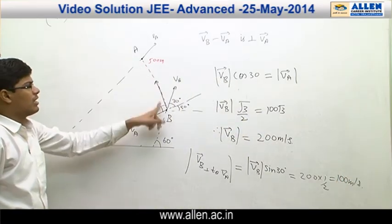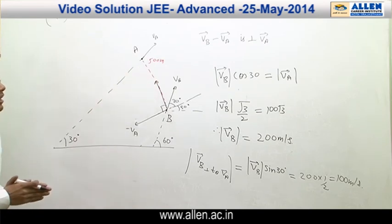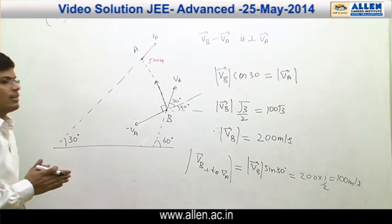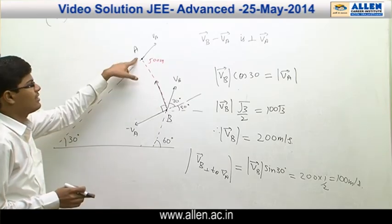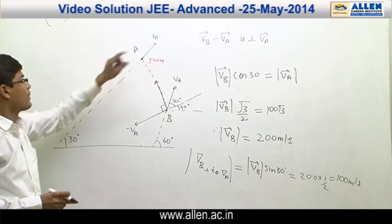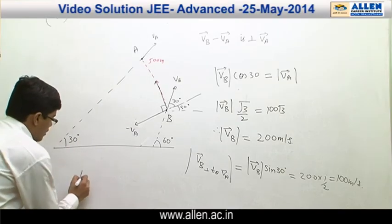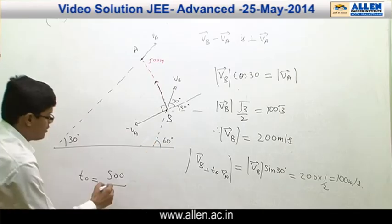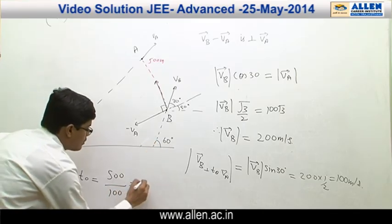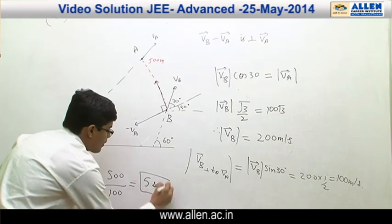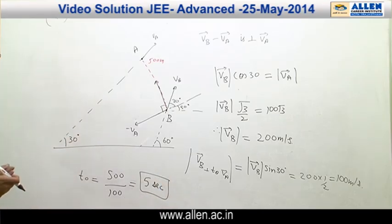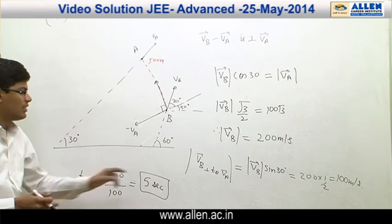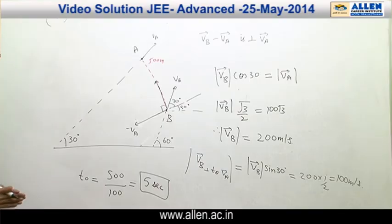So A observes B coming at a speed of 100 meters per second towards it. At time T naught they are just about to collide, meaning B reaches A's position at time T naught. Since both are travelling with constant velocity, acceleration in A's frame is also zero. Therefore T naught equals distance divided by speed, which is 500 divided by 100, equal to 5 seconds. That is the answer to this question.